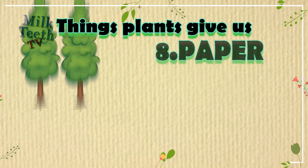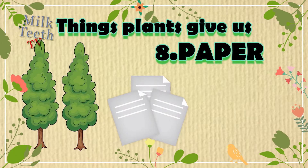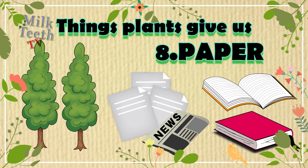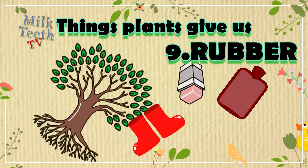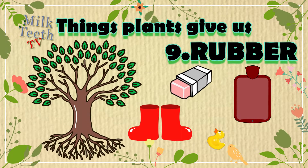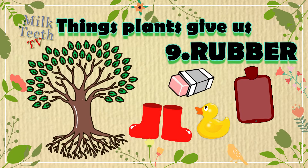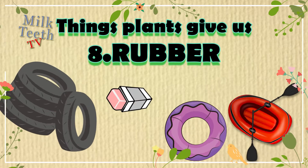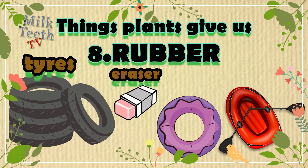Number eight: paper. We get paper from plants, used to make our books, notebooks, and newspaper. Number nine: rubber. We also get rubber from plants, which can be used to make things like tires, erasers, swimming tubes, and even boats.